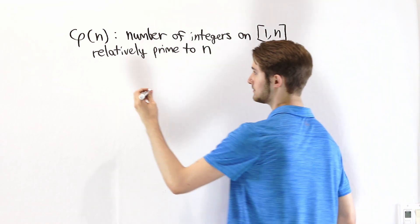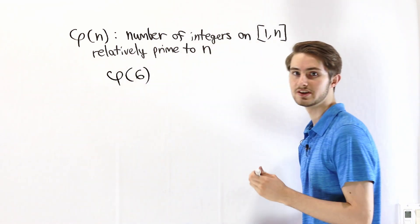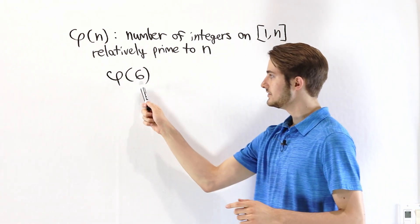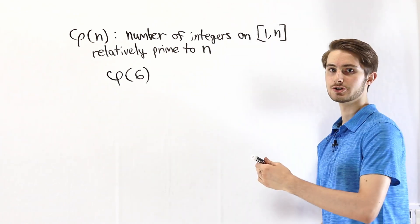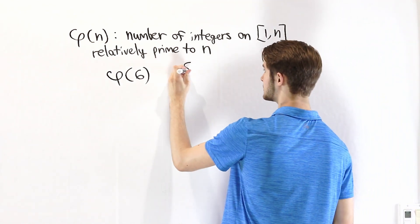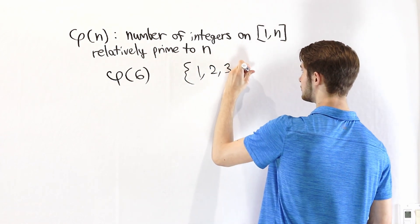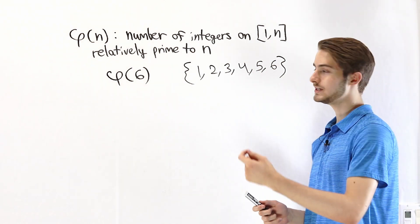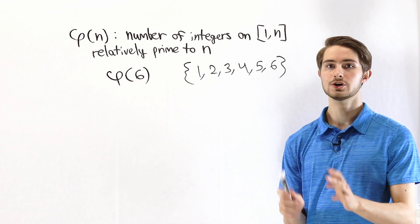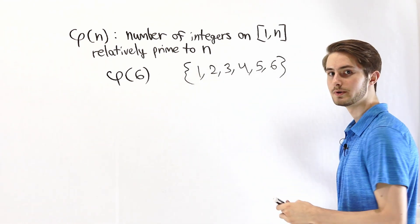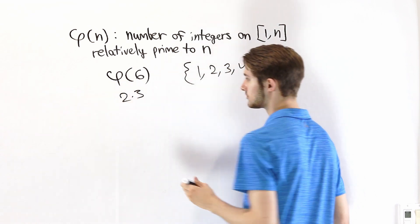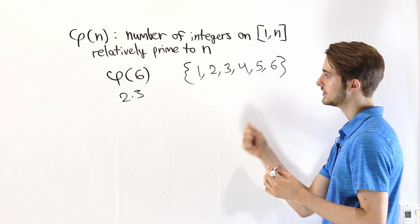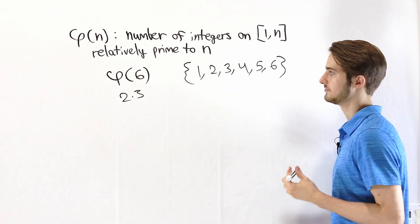Let's look at one example. What is the totient function of 6? We're looking at the interval from 1 to n — in this case n is equal to 6 — so all of the integers between 1 and 6: that's going to be 1, 2, 3, 4, 5, and 6. We want to find the number of integers in this set that have no common factors with 6. We know that 6 is equal to 2 times 3, so we need to find the numbers that don't have a 2 or 3 in their prime factorization.